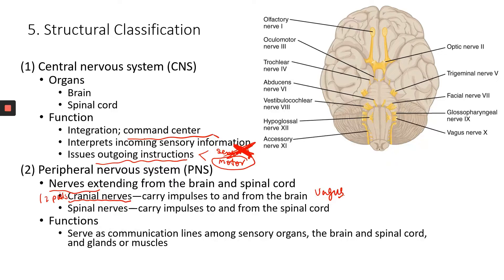The vagus nerve controls some of the visceral organs. For example, it innervates your heart, so it can control your heart rate. Spinal nerves carry impulses to and from the spinal cord, and you have 31 pairs of spinal nerves.